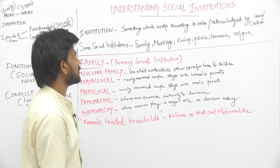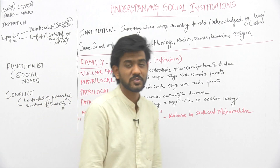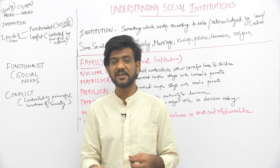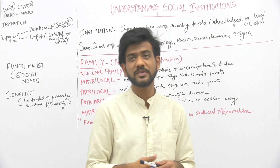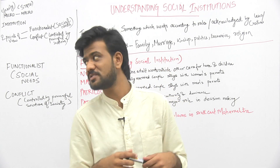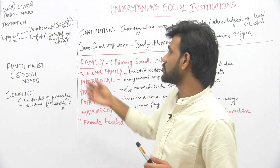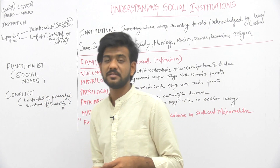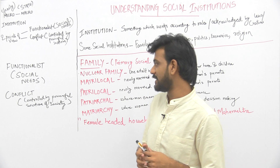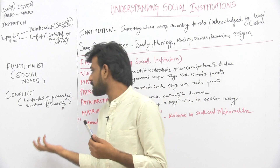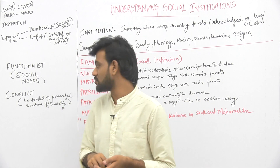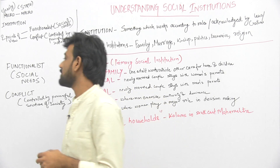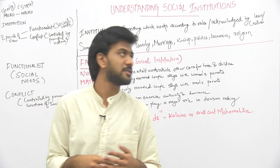There are two points of view that talk about social institutions. The first is the functional school, according to which a social institution helps in fulfilling social needs. The second is the conflict school, which believes that social institutions are controlled by the powerful sections of society, and hence create inequality.